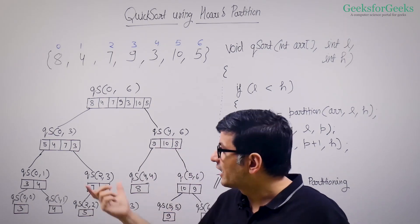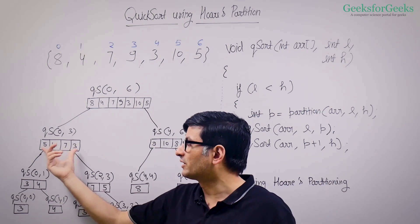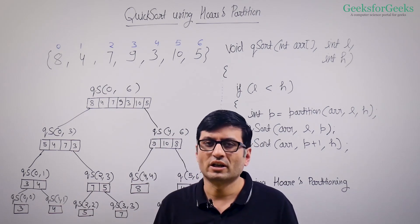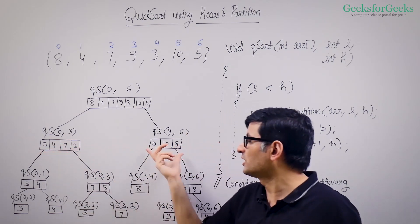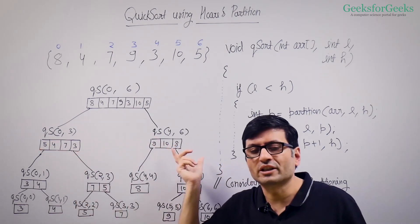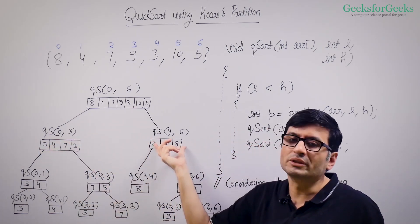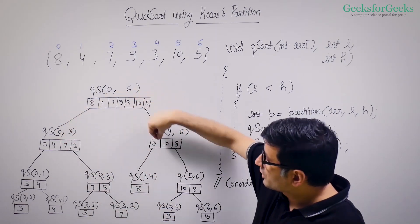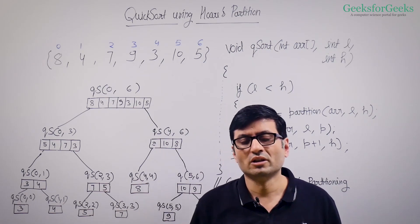Now if you sort these arrays independently — if I sort this I'll get 3, 4, 5, 7; if I sort this I'll get 8, 9, 10. I don't have to do anything extra after that. I just have to do the partition, and after partitioning, if I sort both parts independently, my whole array is sorted. All the smaller elements are smaller than or equal to all elements on the right side, so they are sorted independently.